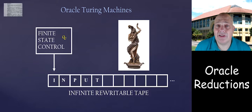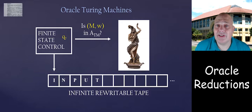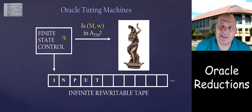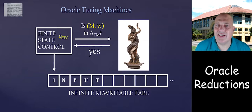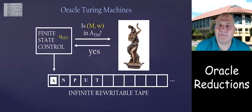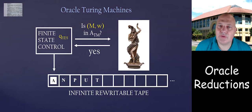For example, we can ask if ⟨M,w⟩ is in ATM. The oracle can be a function that tells us about membership in ATM, and we get in one step an answer: yes or no. If it's yes, we move to state q_yes and have our answer on the tape.